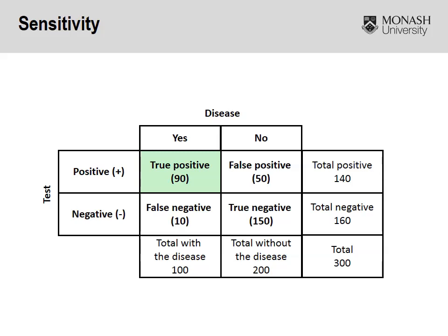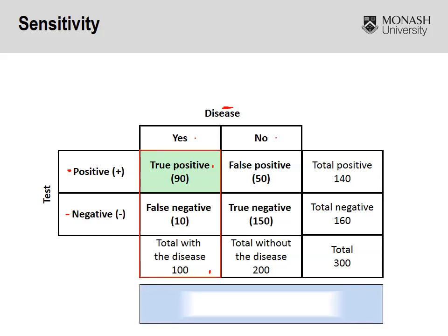Here we have an example with some hypothetical numbers. We've got disease either present or absent, and the test being positive or negative. In this case, sensitivity would be the true positives divided by the total number with the disease — so 90 divided by 100. The sensitivity of our test is 90%. The higher the percentage, the better the test; in this case, 90% accurate at truly identifying the true positives within that population.